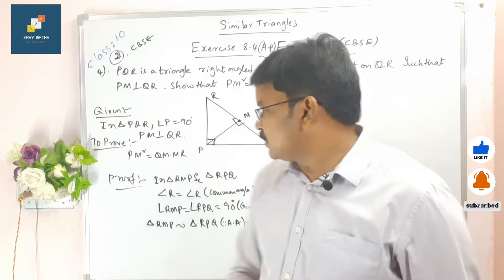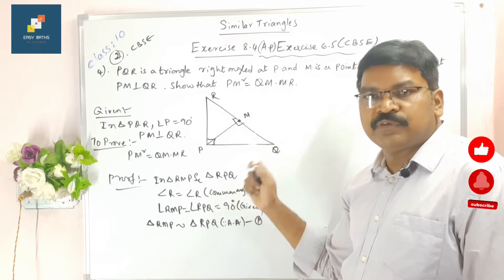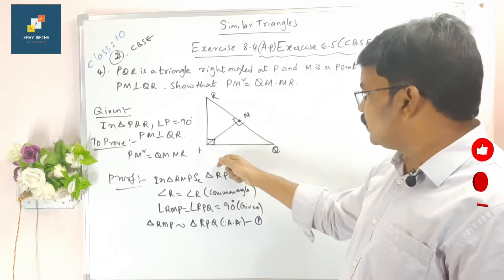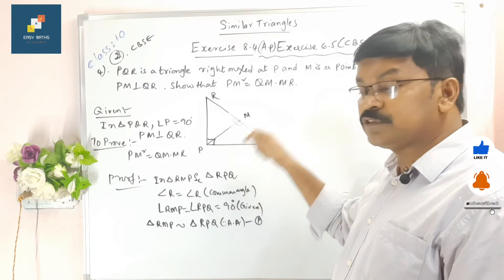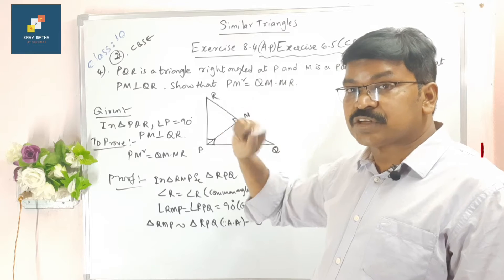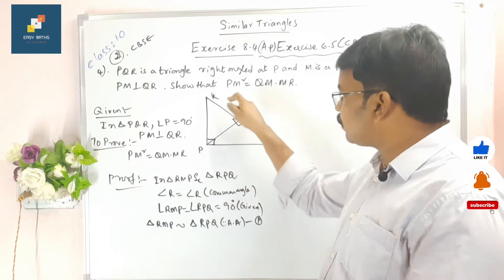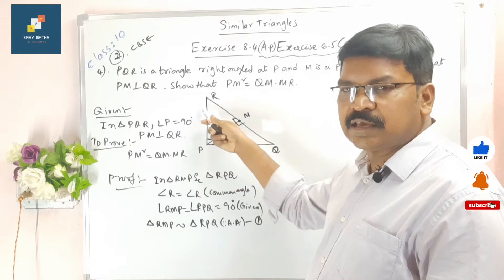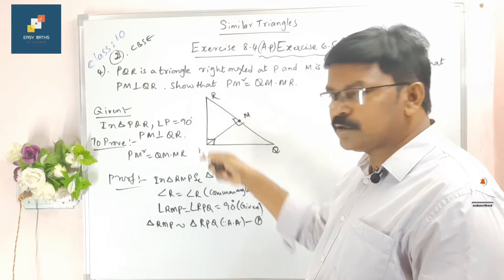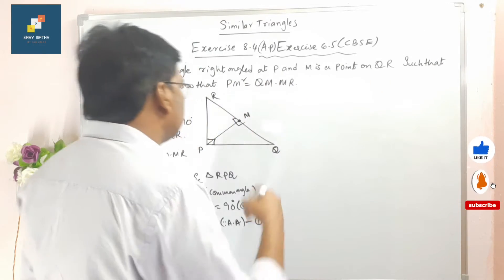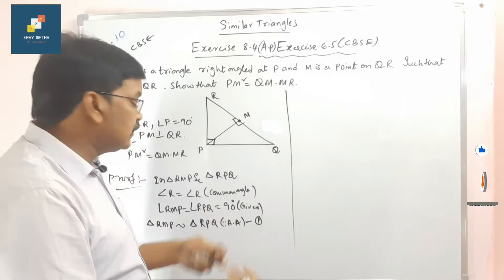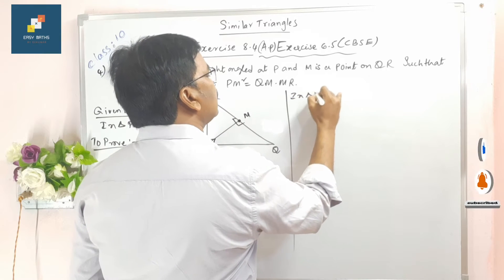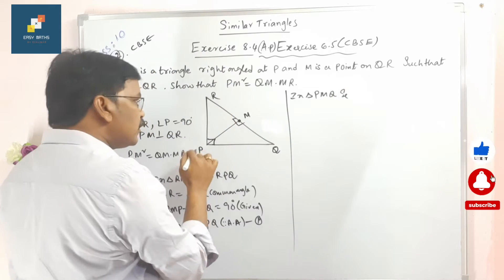These same steps we used in Pythagoras theorem also. There, ABC was a right angle triangle, and we drew BD perpendicular to BC in the construction. We took triangle ABD and triangle ABC like that. Now here, for the other two triangles, we take triangle PMQ and triangle RPQ. We should not forget the order — PMQ corresponds with RPQ, maintaining the correct order of corresponding vertices.